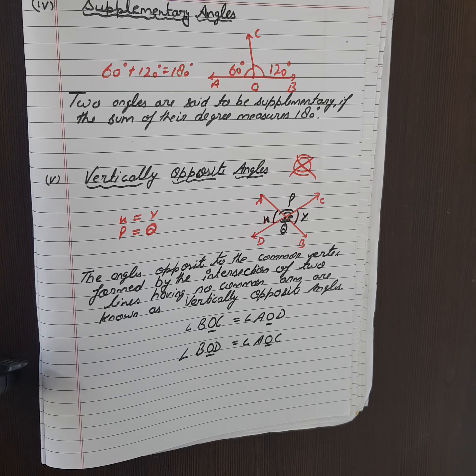Same sign will be equal. So let's see carefully: x equals y, this x will equal to y. P equals Q. The opposite angles to the common vertex formed by the intersection of two lines having no common arm.